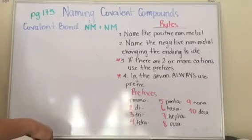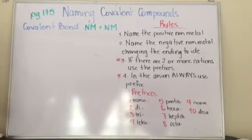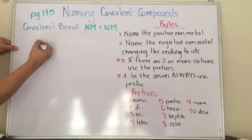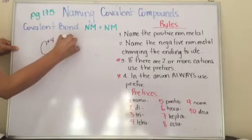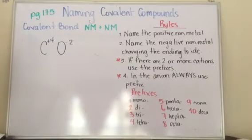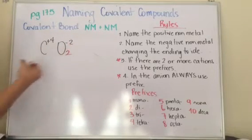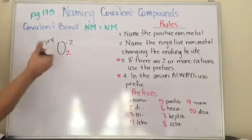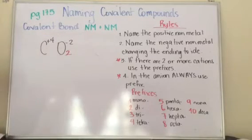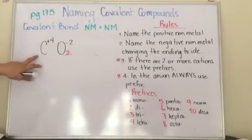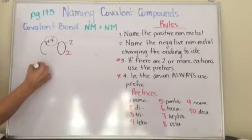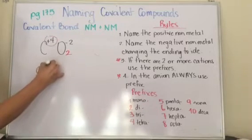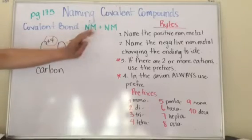We're going to start the practice so that you understand the rules. We're going to start with a simple compound that most of you already know: carbon and oxygen. Carbon has a charge of four and oxygen has a charge of two. To make the two become a four, I put a two in oxygen. And that's my chemical compound: CO₂. Which is the positive non-metal? Carbon. So I'm going to name carbon first because carbon is positive. Carbon — and because it's positive, I don't change anything.